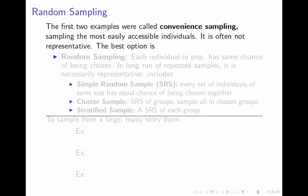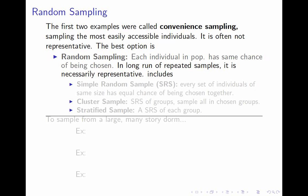The first two examples, especially the first one, are considered convenience sampling — sampling the most easily accessible individuals. Convenience sampling is generally not representative; that's its problem. It can favor some individuals over others. The best option in terms of being representative is a random sample. A random sampling procedure is one in which each individual in the population has the same chance of being chosen. Because it's random, that doesn't guarantee it's representative — you might happen to pick all tall people or all short people. But in the long run, if you repeat that sample, ones with overly tall people will happen just as often as ones with overly short people, and on average it will be representative.